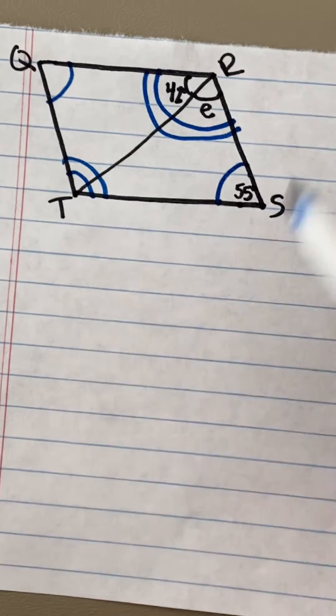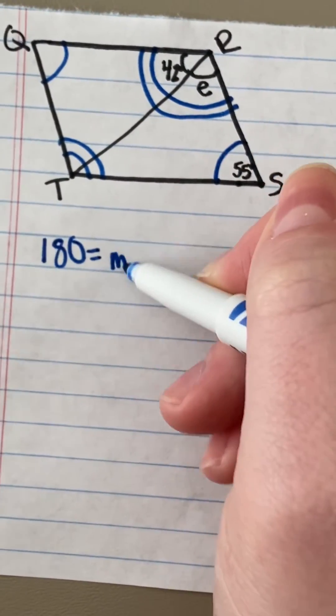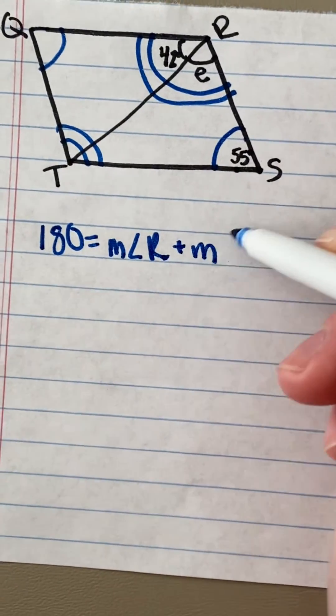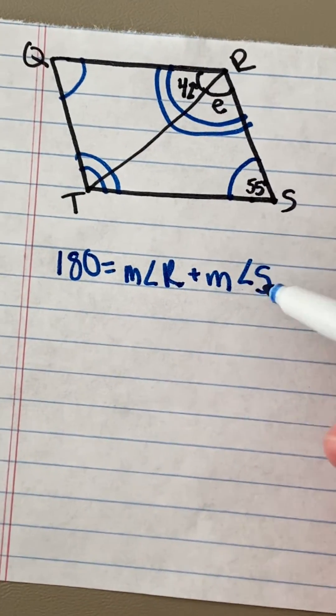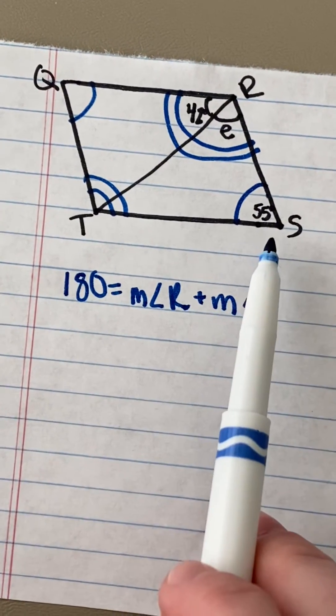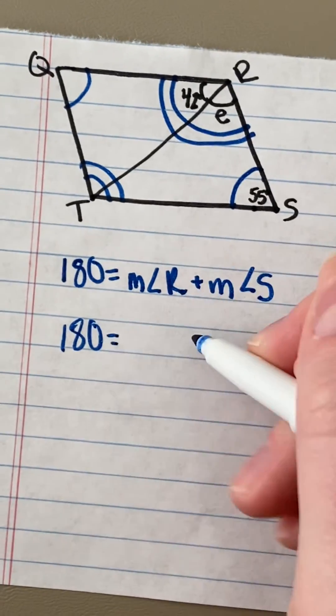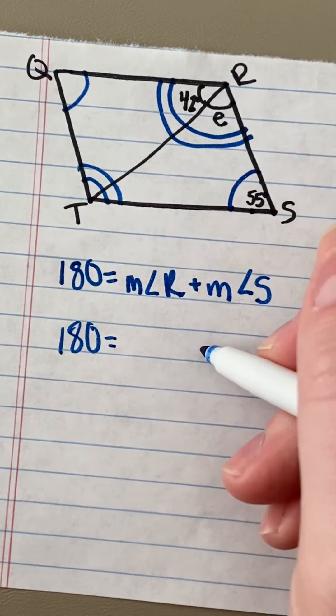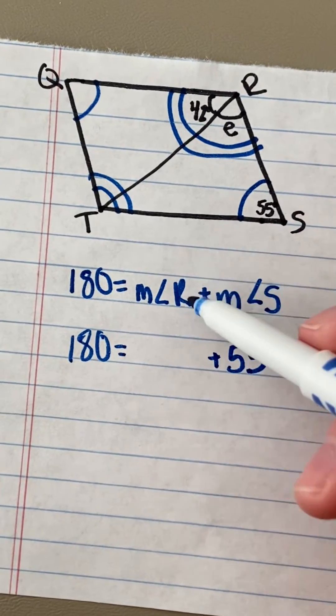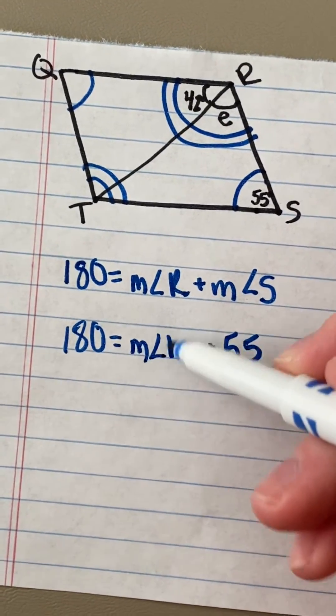So that tells me that the measurement of angle R plus the measurement of angle S are going to equal 180 degrees. They have told me the measurement for angle S and they have told me part of the measurement for angle R. But I don't know exactly what angle R is altogether quite yet.